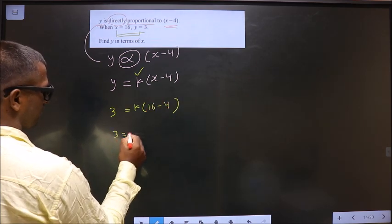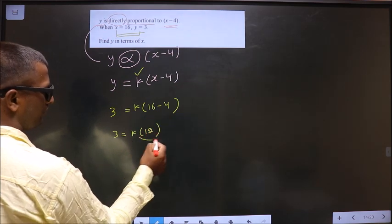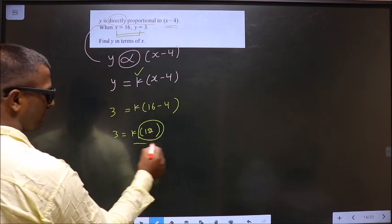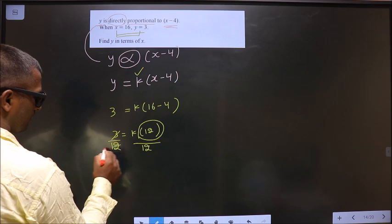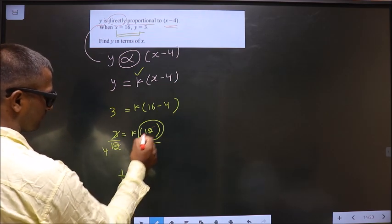So 3 equal to k times of 16 minus 4 is 12. So now, to get the value for k, you have to remove this 12. For that, divide by 12 on both sides. So here I get 1 by 4 equal to k.